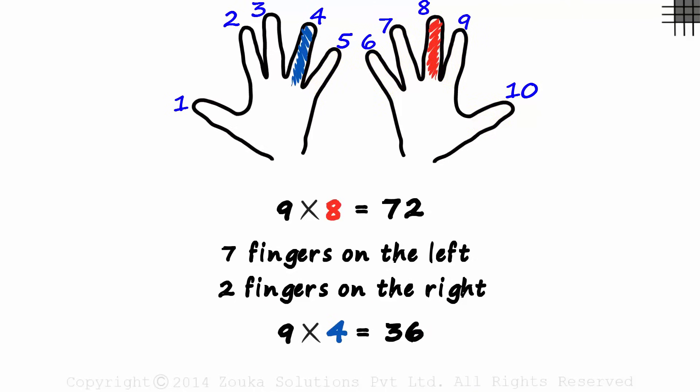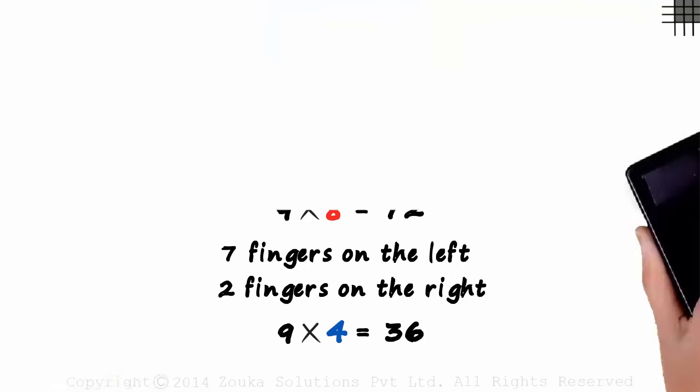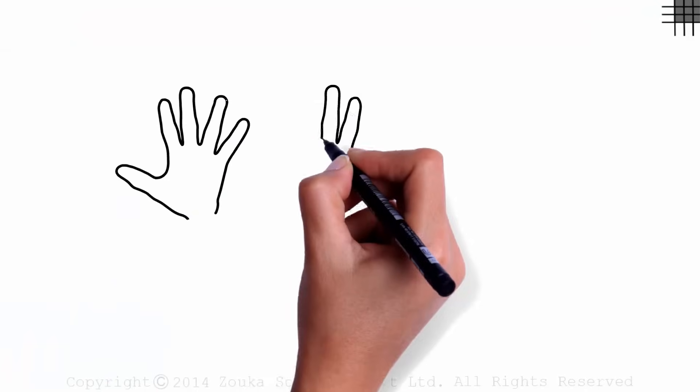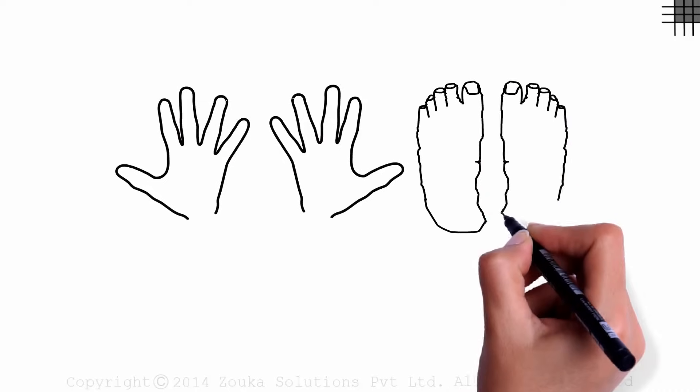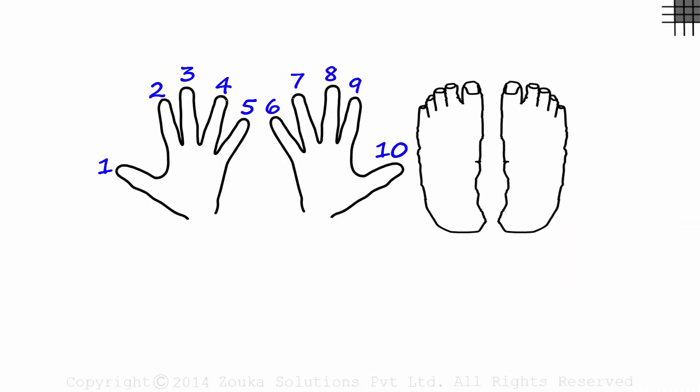But what if we have a double digit multiple of 9? Something like 9 times 12. If it's a double digit multiple like this, you will need to use your feet then. So we use our 2 hands and our 2 feet. We number our fingers from 1 to 10 and our toes from 11 to 20.